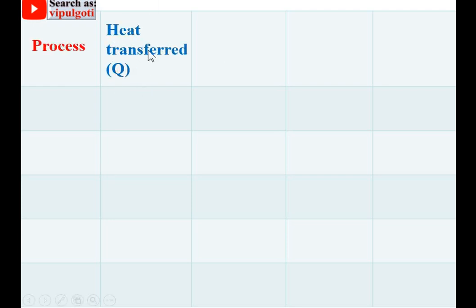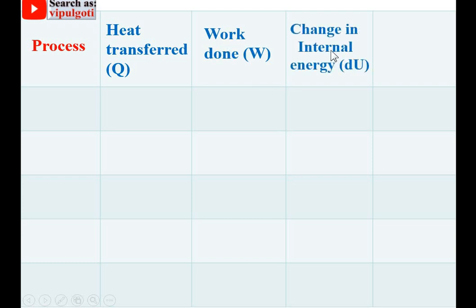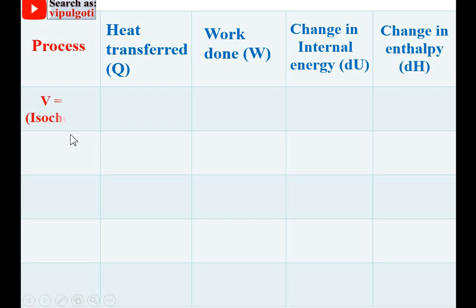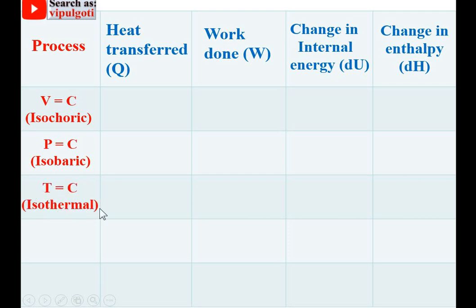Before that, for the numerical portion you have to remember a very important table covering heat transfer Q, work done W, change in internal energy dU, and change in enthalpy dH. The processes in this table are: isochoric (constant volume), isobaric (constant pressure), isothermal (constant temperature), isentropic (adiabatic), and polytropic.